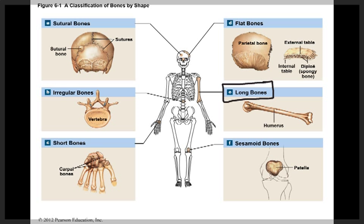First, long bones. Long bones are longer than they are wide. Some examples of long bones are the femur, which is in the upper thigh, and the humerus, which is in the upper arm.